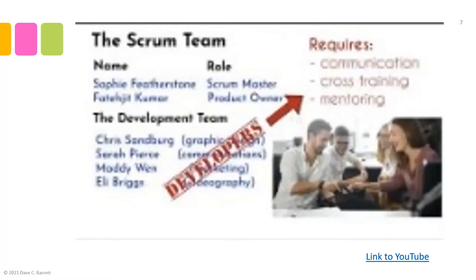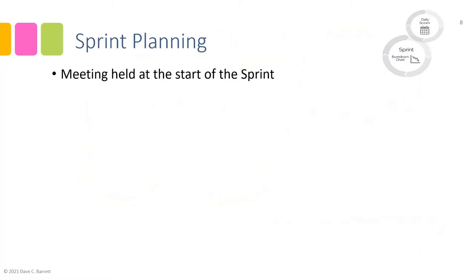In that video you saw the scrum team composed of the same team members seen previously. During this chapter, it's as if we can rewind the Deco Cam version 4 product launch and see what it would look like if the scrum framework was used. Fadijit was the product owner, Sophie was the scrum master, and the other team members were the development team. Now we're going to go into sprint planning, which is our next step.